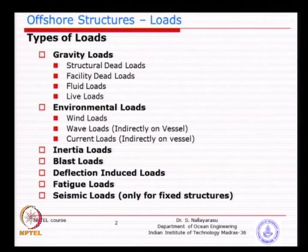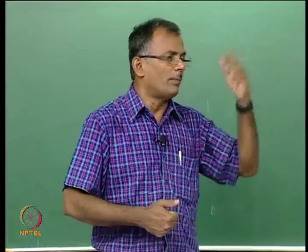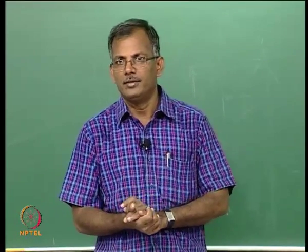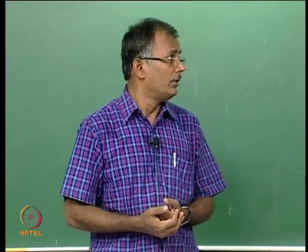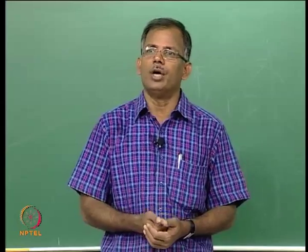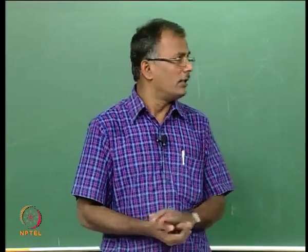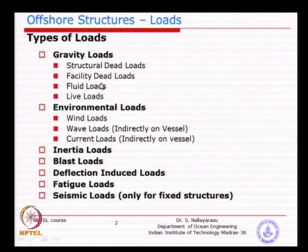That is why gravity loads include dry loads — either the structure weight or facility weight — plus the fluid weight, the weight of oil and gas coming from the ground. The last category is live loads — variable loads. Both fluid loads and live loads are varying: fluid loads vary with production rate, while live loads represent supply from external sources. For a platform with living facilities, supplies like food items vary over time, making them variable loads. These live loads, or non-fixed loads, could vary with time, but the magnitude is actually quite small compared to dead loads and fluid loads.